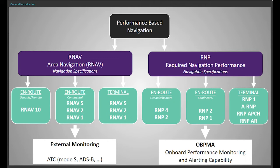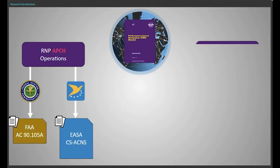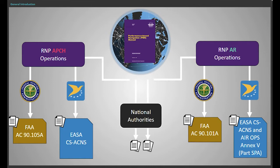You will find a detailed description in the Aircraft Positioning Module. RNP approach and RNP AR operations for approach and departure are described in the RNP section of the manual. There are different regulations for RNP approach and RNP AR operations, all summarised in ICAO Document 9613, the Performance-Based Navigation Manual. Note, before EASA CS-ACNS became active, aircraft were certified using AMC 20-27A for RNP approach and AMC 20-26A for RNP AR.